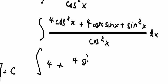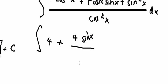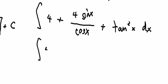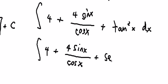Plus 4 sin x over cos x plus tan squared x dx. And this one we change about sec squared x minus 1. 4 minus 1, you got about 3.